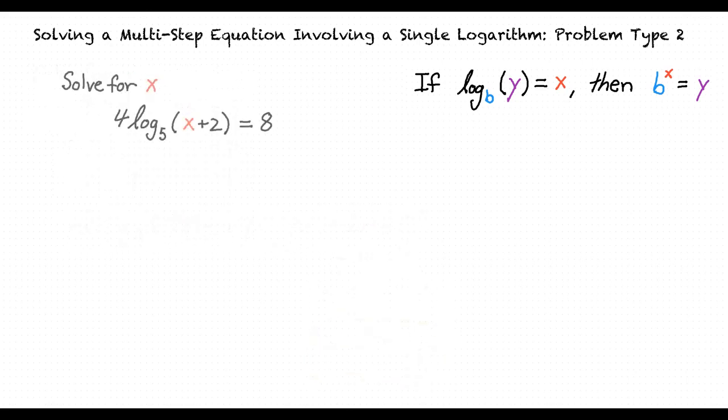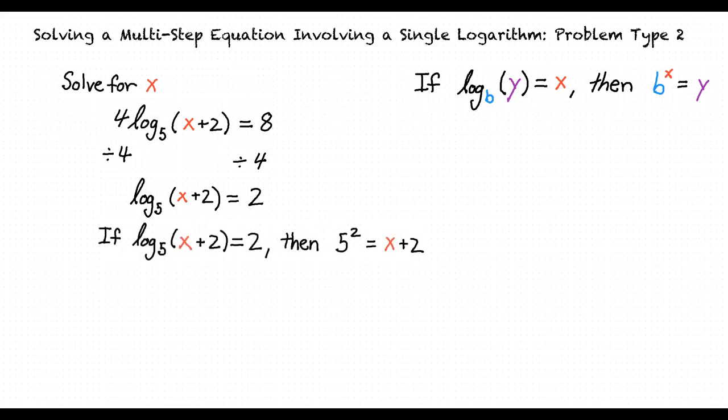Sure. In this problem, we are asked to solve for x in 4 times the base 5 logarithm of x plus 2 equal to 8. So, our first step is to isolate the logarithm, and we can do so by dividing both sides of the equation by 4. We now want to express our logarithmic equation in exponential form. Doing so, it will now look like this.